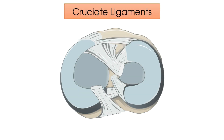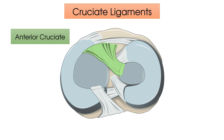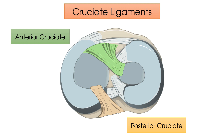First let's examine the cruciates. We have the anterior cruciate ligament and the posterior cruciate ligament. The way of remembering which one is which is based on where they insert into, i.e. the anterior cruciate ligament inserts into the anterior surface of the tibia and the posterior cruciate ligament inserts into the posterior surface of the tibia. They overlap each other in an X shape and run through the centre of the knee joint.